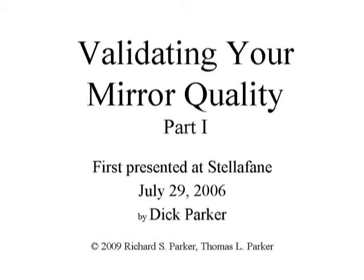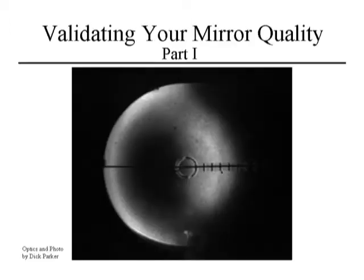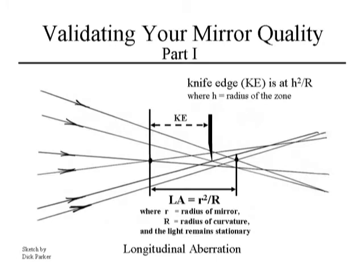Good afternoon. This afternoon I'm going to be talking to you about validating the quality of your mirror. I'm going to assume for the purposes of this talk that you already are familiar with the Foucault knife edge test and the modification of it using a Ronchi screen instead of a knife edge. I'm also going to assume that you know how to measure the zones on your mirror against the knife edge position, where the knife edge relationship to the zonal radius is h² over R, where h is the zonal radius and R is the center of curvature, and that you have a table of numbers and now we're looking to establish the quality of your mirror.